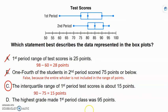But I'm going to look at answer choice D just to make sure. The highest grade made in first period class was 95 points. Let's go to first period. Let's go to the last number on the box plot. Oh, remember, that was around 98, so that is not correct.